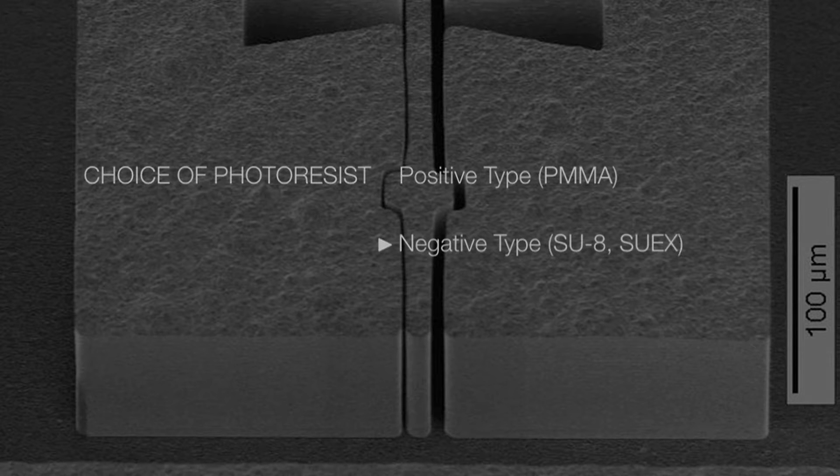Negative type photoresists such as SU-8 or SU-X. Here, exposure to X-rays result in increased cross-linking between the adjacent chains to form a complex three-dimensional structure that has higher average molecular weight than the original. Because of this, the irradiated regions cannot be dissolved during the development process.